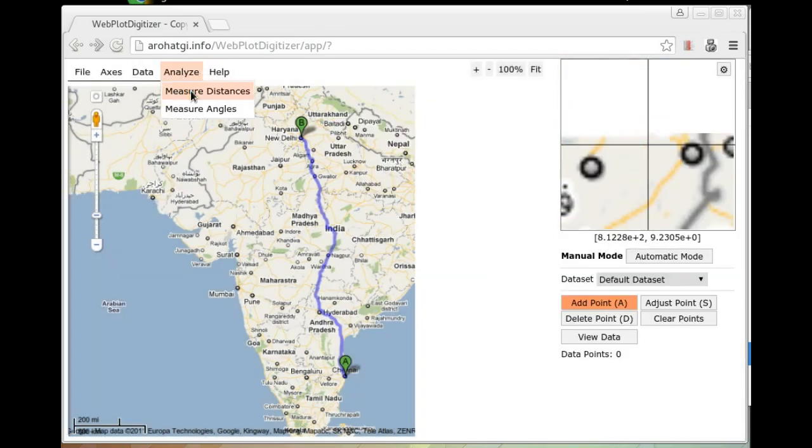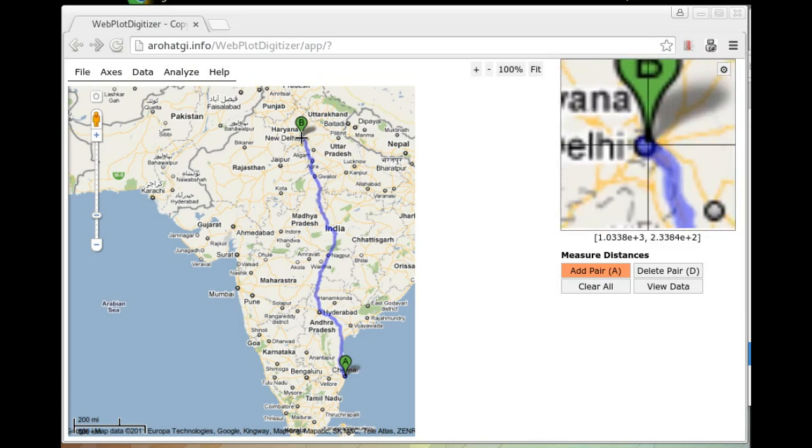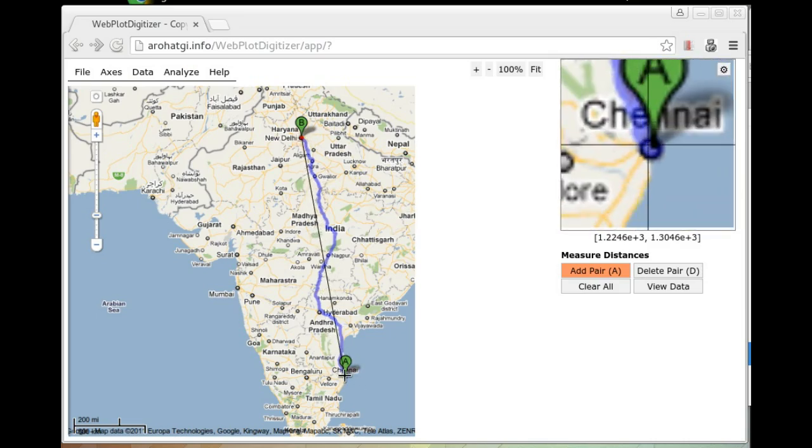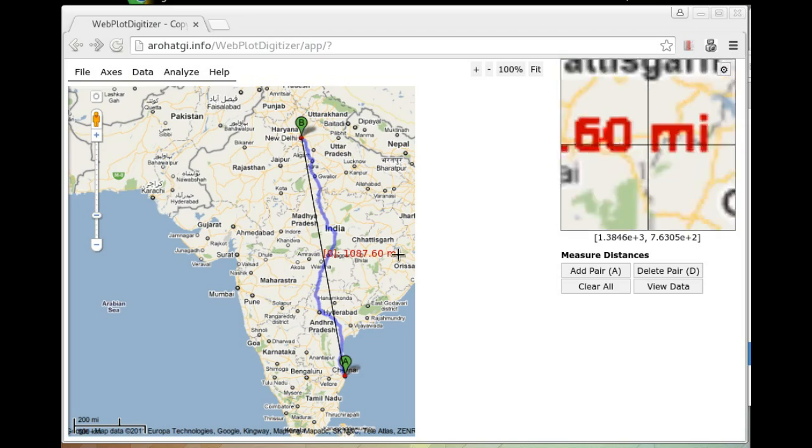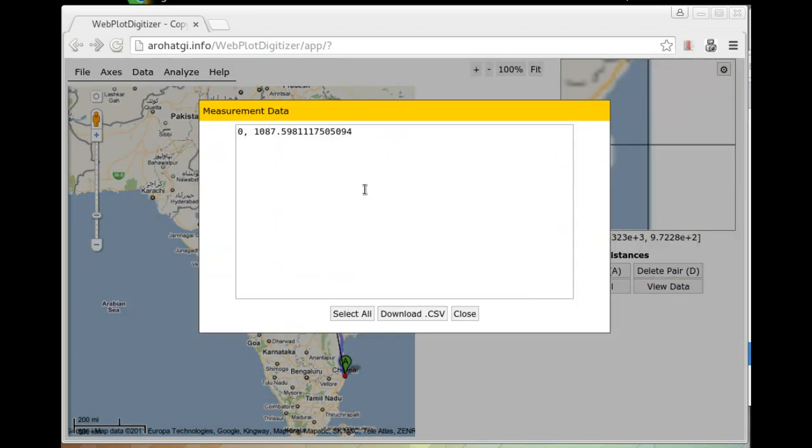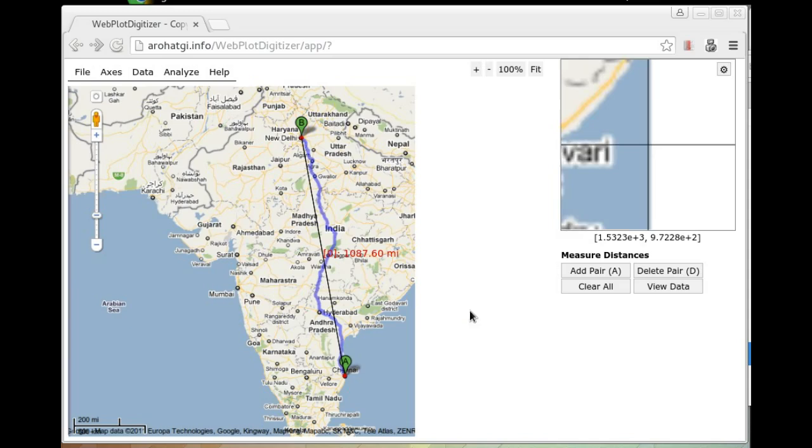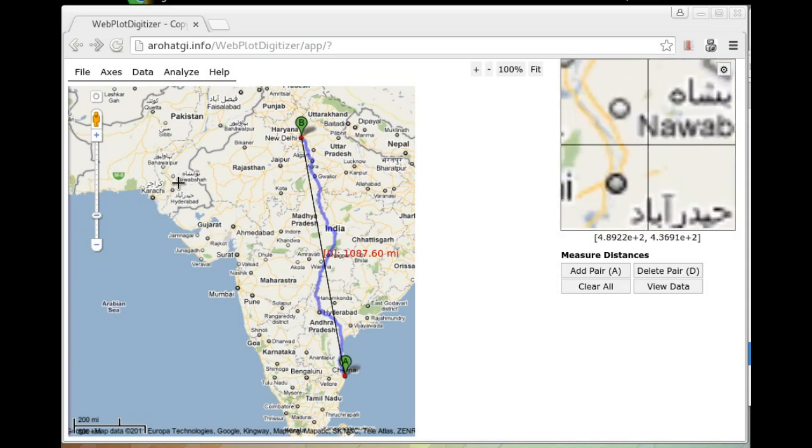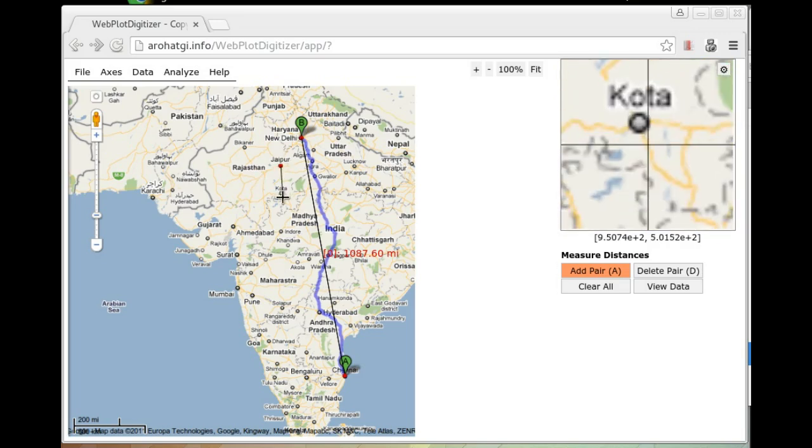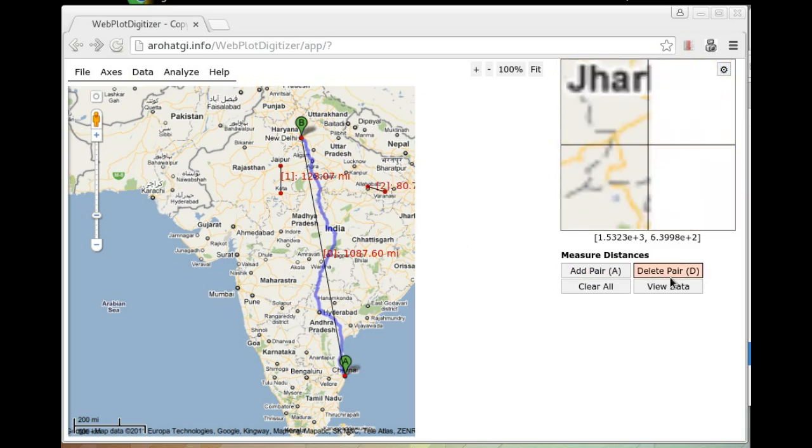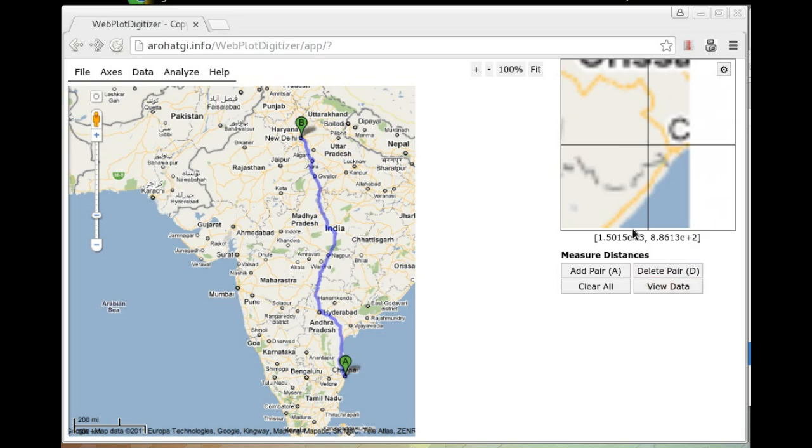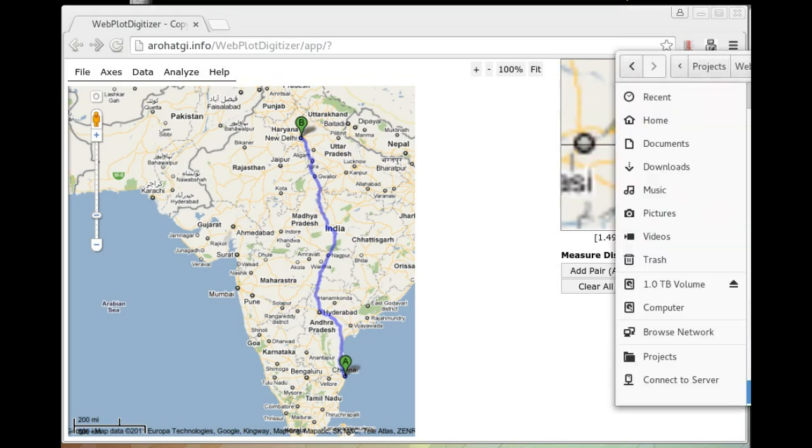Now you can skip over to measure distances and add a pair. So this is the distance between Delhi and Chennai, which is 1087 miles. This is of course the straight line distance. You can click view and it will show the distance measurements. You can also add more such distances between several cities. You can also delete some distance measurements or clear everything entirely.